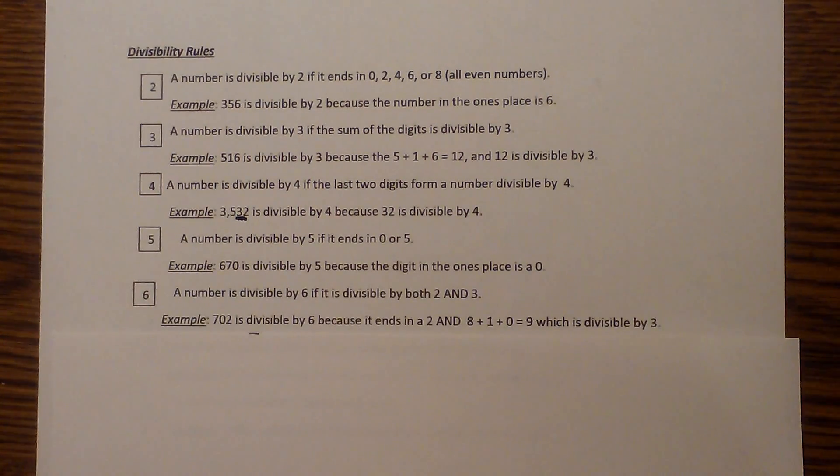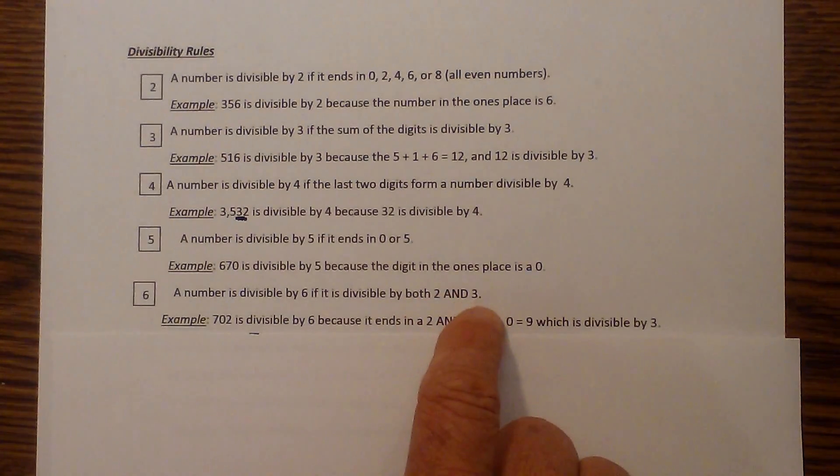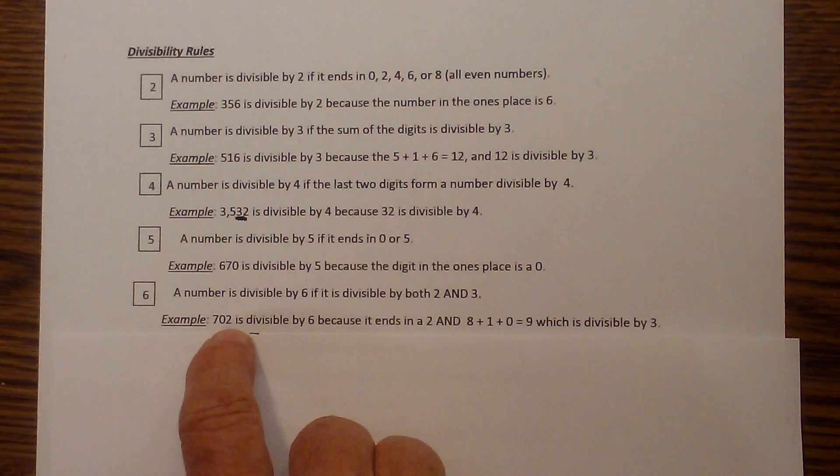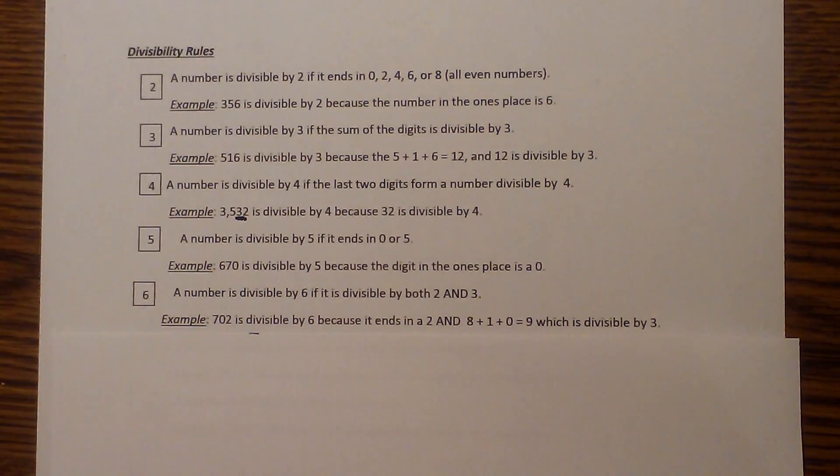6 - it must be divisible by both 2 and 3 to be divisible by 6. So look at 702. We know it's divisible by 2 because of the 2 there, and 7 plus 2 is 9, which is divisible by 3.